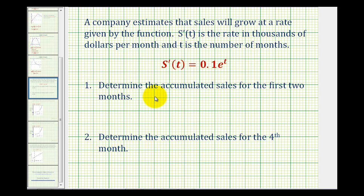We want to determine the accumulated sales for the first two months, and then determine the accumulated sales for the fourth month. So if we integrate the sales rate over an interval of time, it will tell us the accumulated sales.